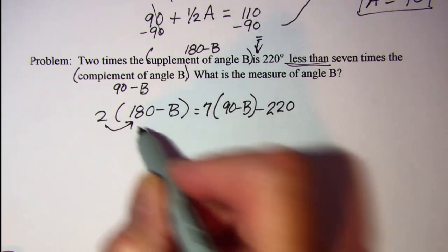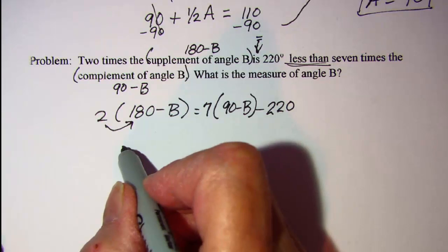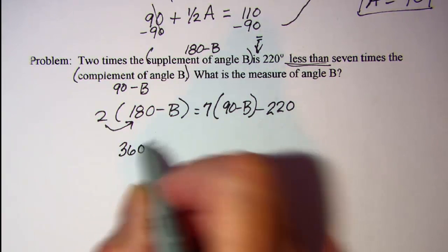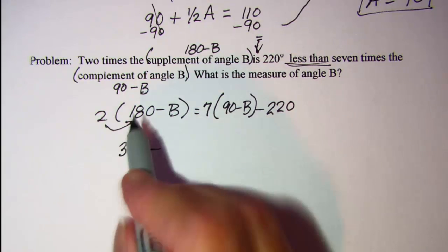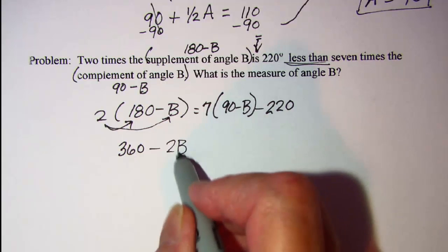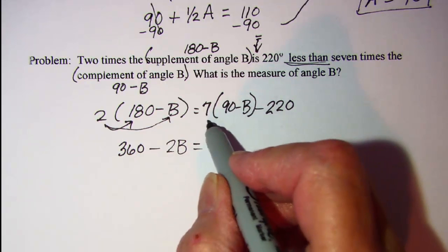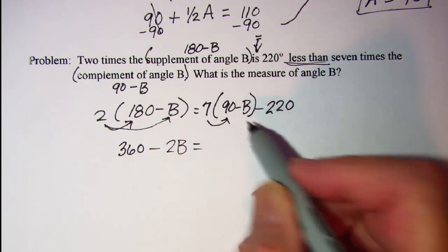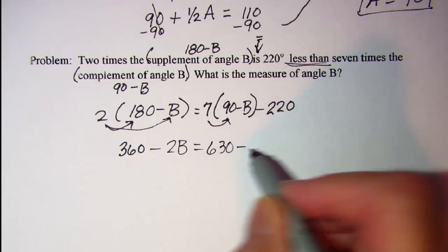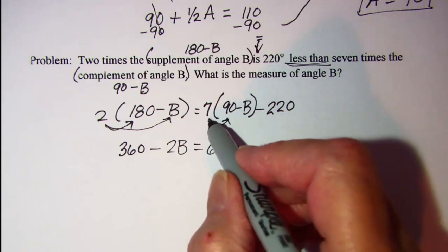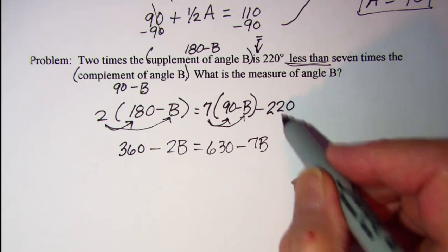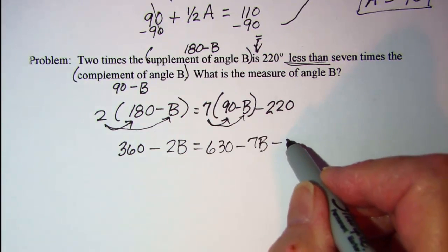Let's distribute. We have two times 180 is 360, minus two times B. On the right side, seven times 90 is 630, minus seven times B. Then just copy the minus 220.